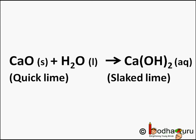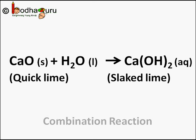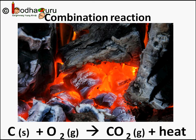So it's a combination reaction in which a single product is formed from two or more reactants. The reactants here are quicklime and water, and the product is calcium hydroxide, that is slaked lime.